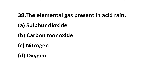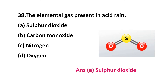Question 38: the elemental gas present in acid rain — option A: sulfur dioxide, option B: carbon monoxide, option C: nitrogen, option D: oxygen? The correct answer is option A: sulfur dioxide. Sulfur dioxide is present in acid rain because sulfur can dissolve in water and form sulfur dioxide, which is why it is called acid rain.